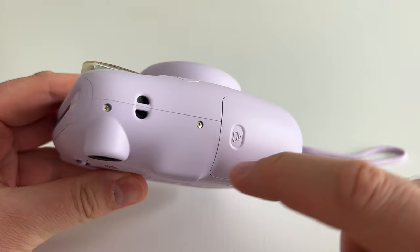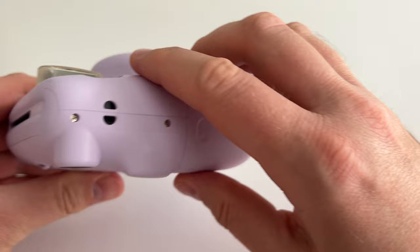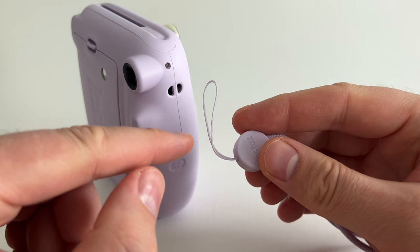I prefer to attach the strap on the side of the viewfinder because I hold the camera with my right hand and I like to have the strap around the hand that holds the camera.